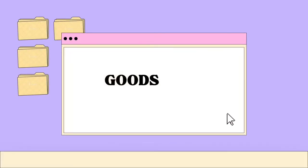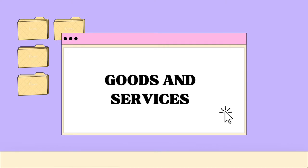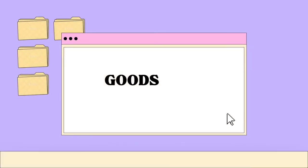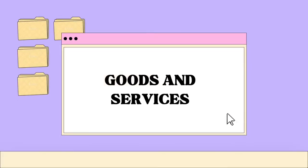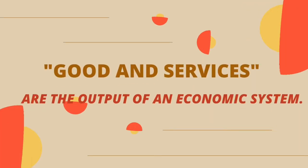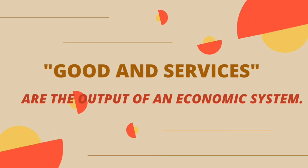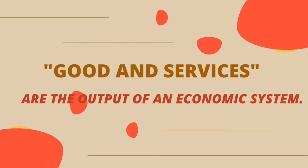We can use Goods and Services in our daily lives. Whether you're at home, school, or work, you are using Goods and Services. Goods and Services are the output of an economic system.